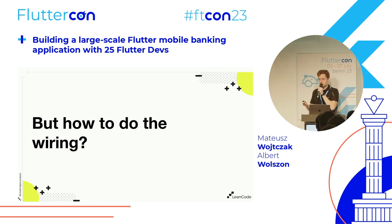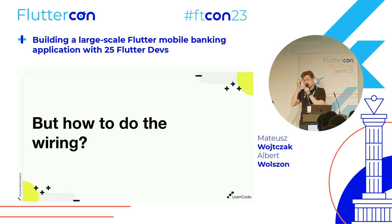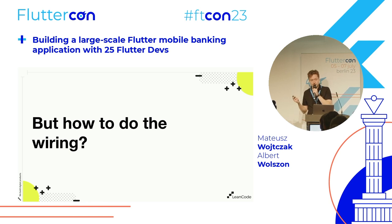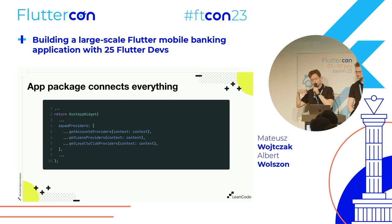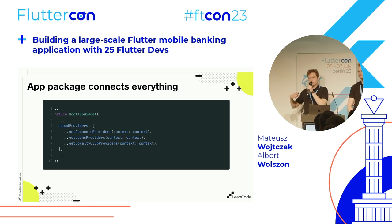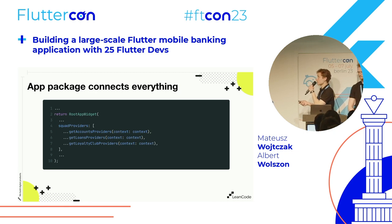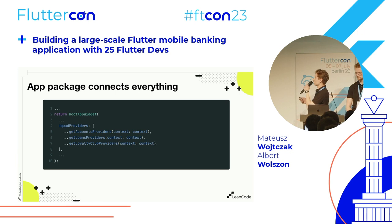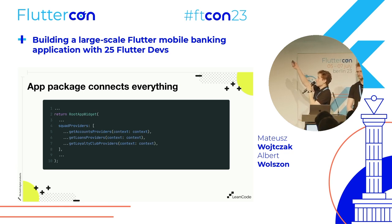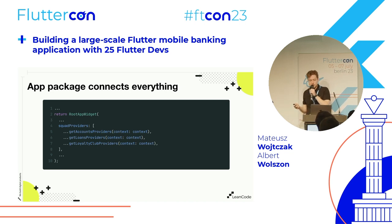But how do you do the wiring between all those packages? Remember that your app package — your entry point to the whole app — is the place where you can do all this wiring, because your app package depends on everything. You have access to everything there without breaking any rules. For example, if you use providers for dependency injection, you can expose them publicly from those packages and wire them up in your root widget. Your app package connects everything.